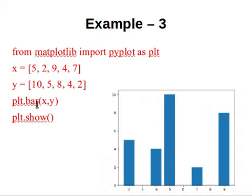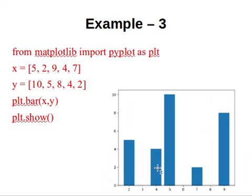In the bar chart example, instead of writing plt.plot, I write plt.bar to create bars. Inside plt.bar, you provide the x-coordinate and y-coordinate. For example, x=5 and y=10 gives one bar; x=2, y=5 gives another; x=9, y=8 gives another; then 4,4 and 7,2. The bar function in pyplot automatically creates the bars, and plt.show() displays the graph.